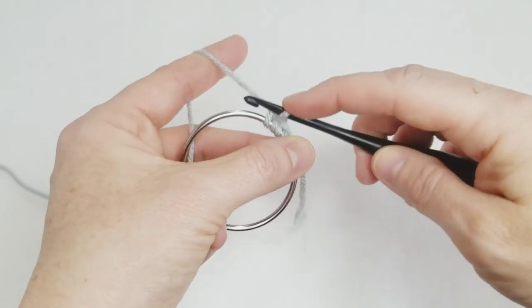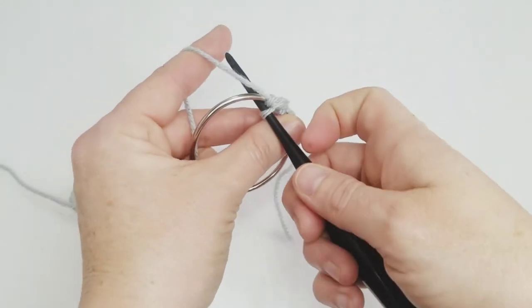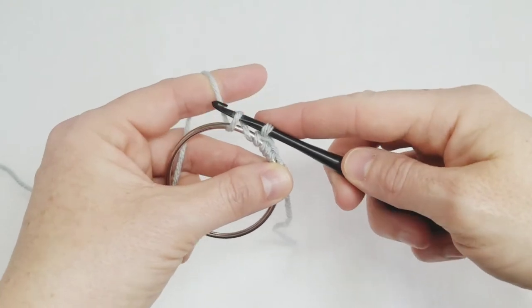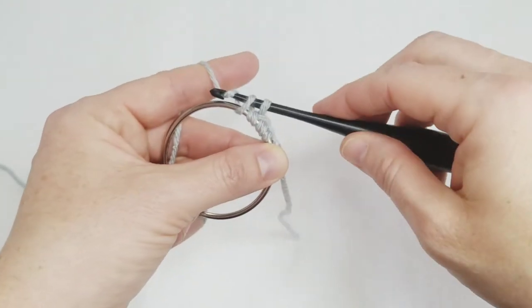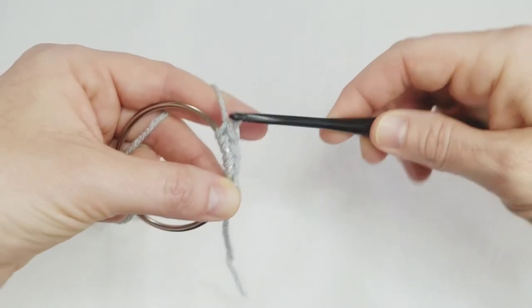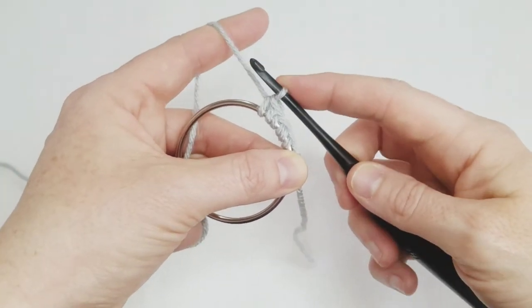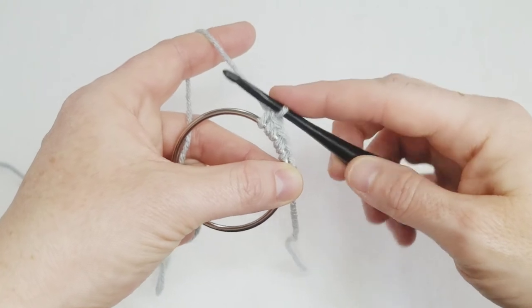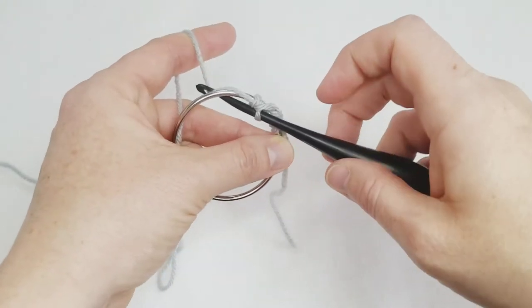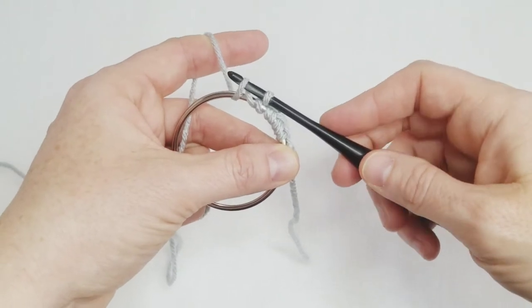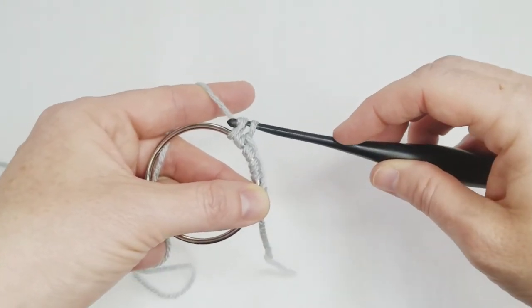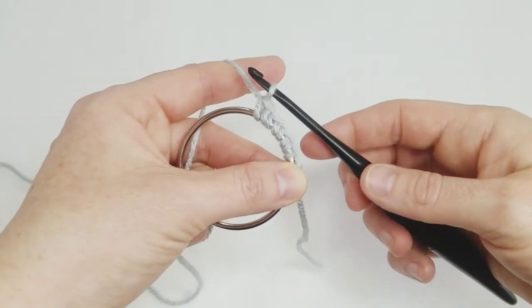Let's do that again. Go through the center of your hoop, yarn over, pull up a loop, go over the top of your hoop, and pull through the stitches on your hook. One last time, and then I'm going to show you an alternative. Go through the center of your hoop, yarn over, pull up a loop, yarn over above your hoop, and pull through.